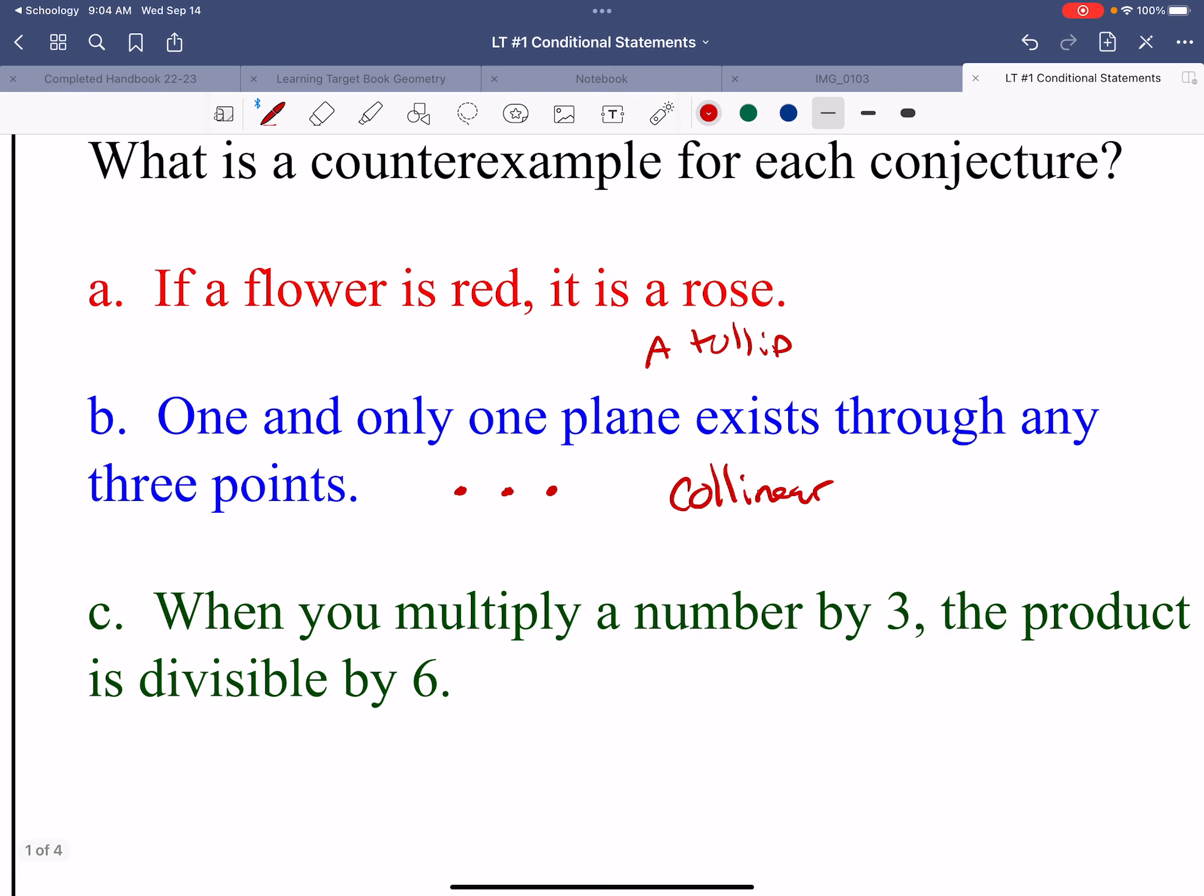When you multiply a number by three, the product is divisible by six. So when I do zero times three, that gives me zero, and that is not divisible by six. There's multiple counterexamples for that one as well.